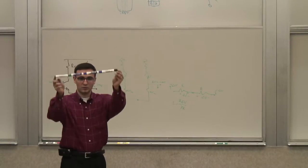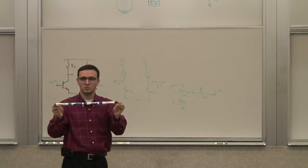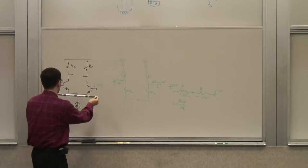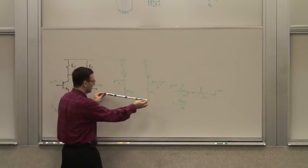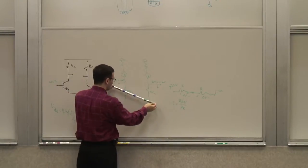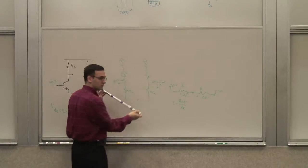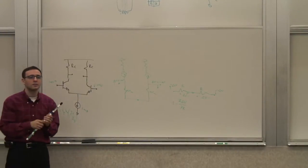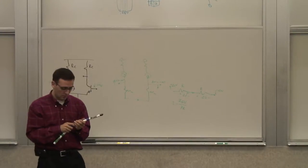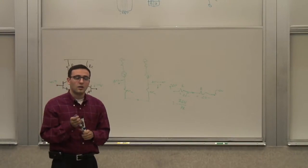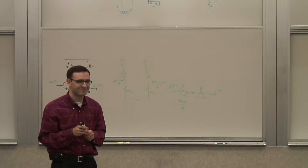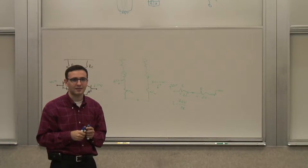For common mode, the midpoint is moving up and down by the same amount. The assumption that there's a virtual ground is only valid if the differential signal is small. If it's larger — correct, I'm actually going to talk about that in a second.